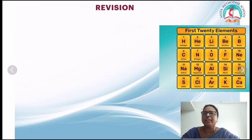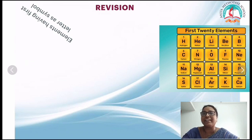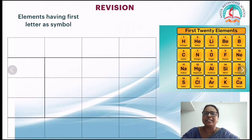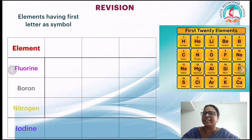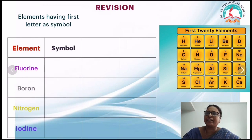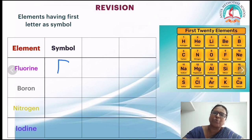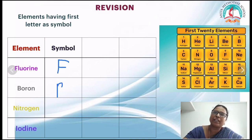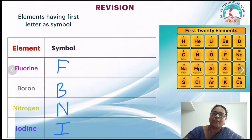Some elements use the first letter as their symbol. Fluorine — symbol F. Boron — the first letter is B, so the symbol is B. Nitrogen — N. Iodine — I.